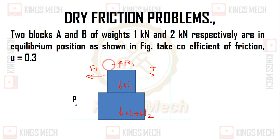For the first block, there are 4 forces active. For the 2nd block movement, considering the left side ground forces.